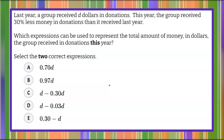Here's our math question today. Last year, a group received D dollars in donations. This year, the group received 30% less money in donations than it received last year. Which expressions can be used to represent the total amount of money in dollars the group received in donations this year? We're asked to select the two correct expressions from these five.